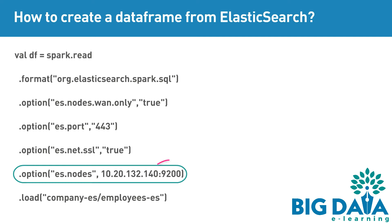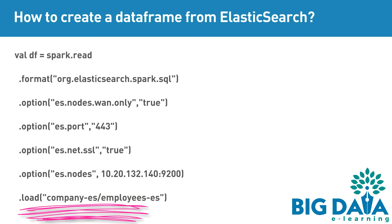The port number is usually 9200 and the host-name is the IP address of the Elasticsearch nodes. Then, using the load API, specify the index and the type details.